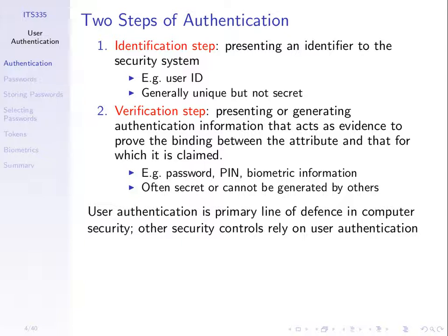When I log into Gmail, my ID is my email address, but to prove I own that account, I must also submit a password. The idea is that only one person knows that password, so knowing it is evidence you're the account owner. Other techniques include PINs, which are really a subset of passwords, and biometric information like your fingerprint. The verification step uses evidence which is secret — or which cannot easily be generated by others.